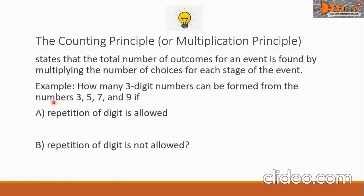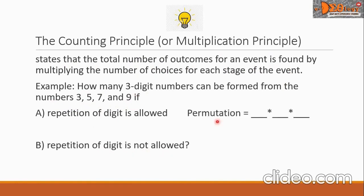Let's have an example. How many three-digit numbers can be formed from the numbers 3, 5, 7, and 9? Letter A: repetition of digit is allowed. Letter B: repetition of digit is not allowed. To solve for problem A, let us write three blanks here to represent the three-digit numbers.